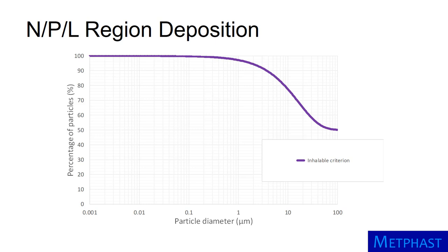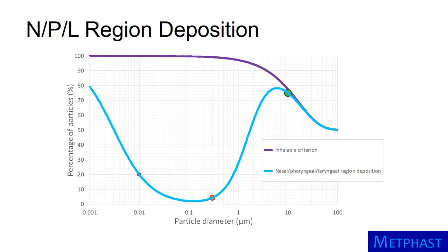With the inhalable sampling criterion already plotted on the figure, we can look at the percentage of particles deposited in the nasal pharyngeal-laryngeal region as a function of particle size. These values were derived by the International Commission on Radiological Protection, or ICRP. Roughly 20% of the red 10 nanometer particles are deposited in the nasal pharyngeal-laryngeal region, whereas only about 4% of the orange 300 nanometer particles will deposit there. Nearly all of the green 10 micrometer particles that are inhaled end up depositing in the nasal pharyngeal-laryngeal region — about 75% of the particles originally in the inhaled air. The light blue curve shows the percent of particles deposited in this region for all particle diameters. Notably, almost all particles larger than 10 micrometers deposit in this region due to their inertia, and a large fraction of nanoparticles smaller than 10 nanometers deposit there due to rapid diffusion.